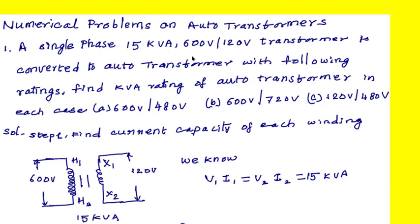A single-phase 15 kVA, 600 by 120 volts transformer is to be converted as an auto transformer. Find the kVA rating of the auto transformer in each case: A) 600V by 480V, B) 600V by 720V, C) 120V by 480V. The single-phase transformer primary voltage, secondary voltage, and its kVA rating are given as a two-winding transformer.